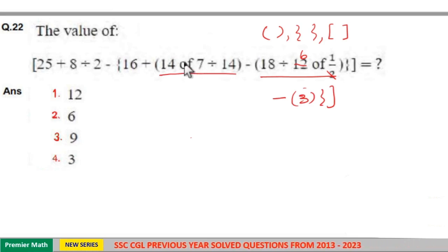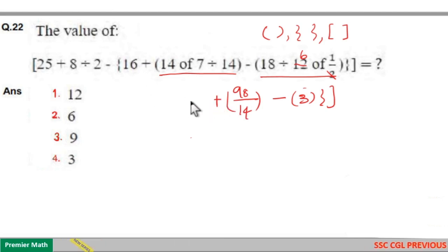Now bracket 'of'. So before division you have to do 'of'. So 14 into 7 is 98. So 98 by 14. This becomes 98 by 14 remaining plus 16.